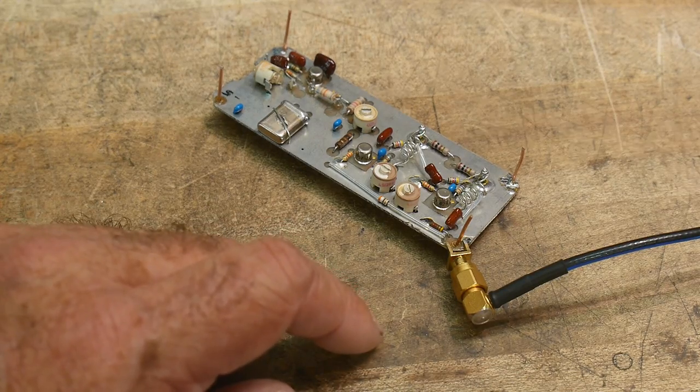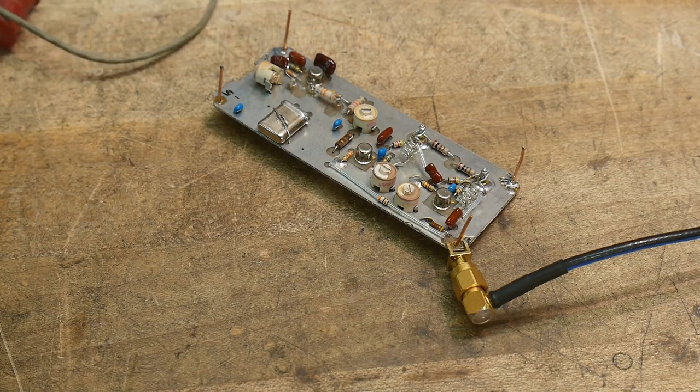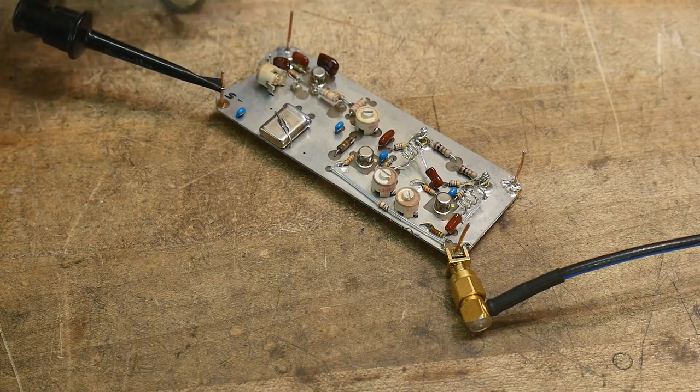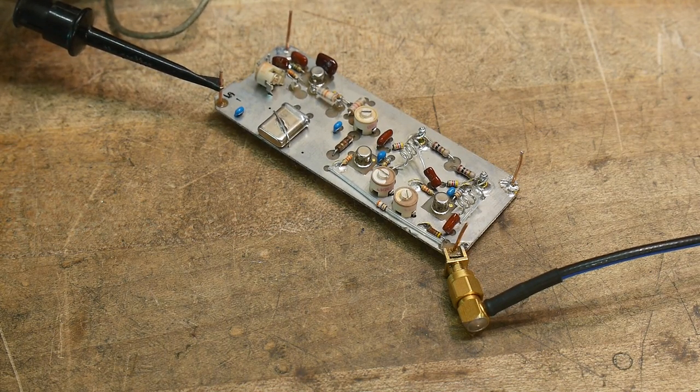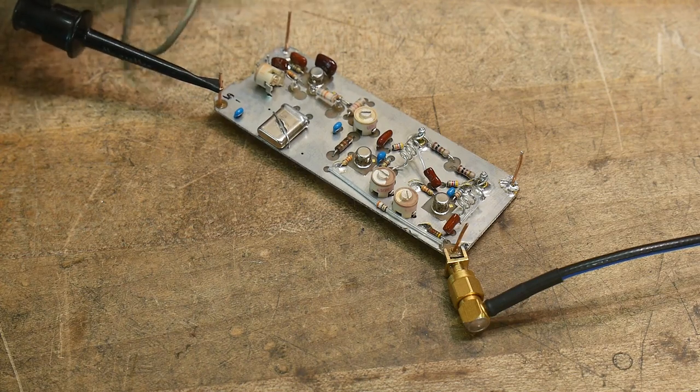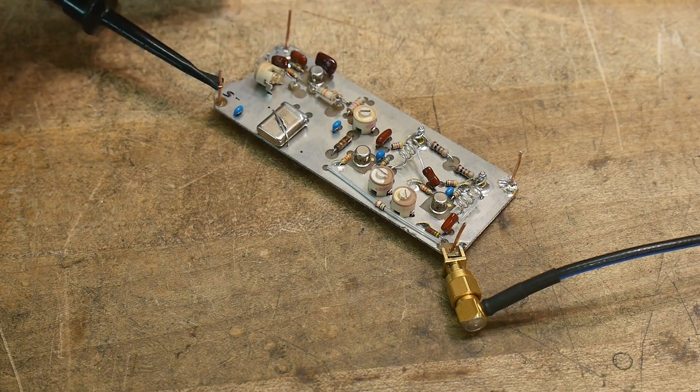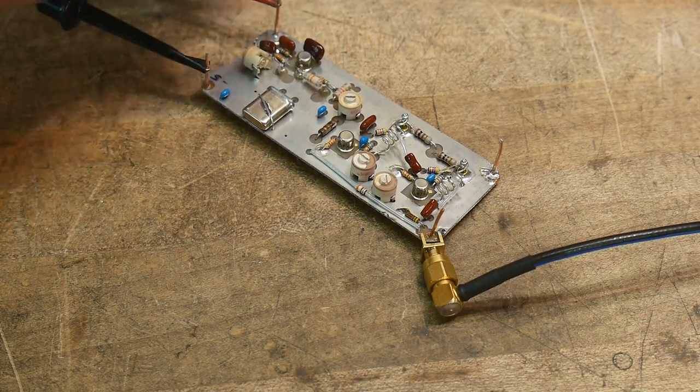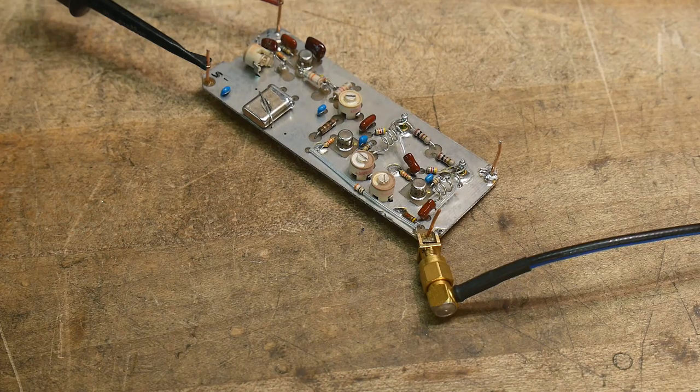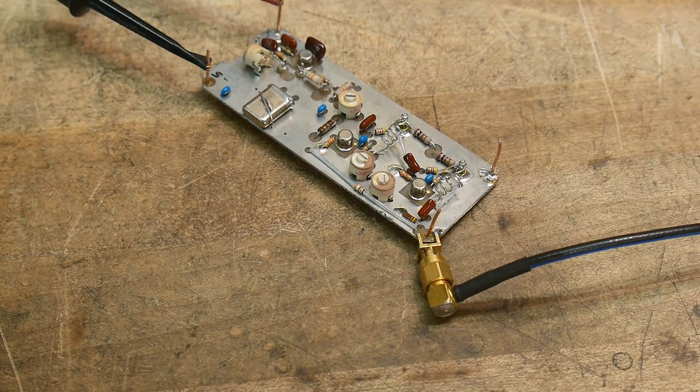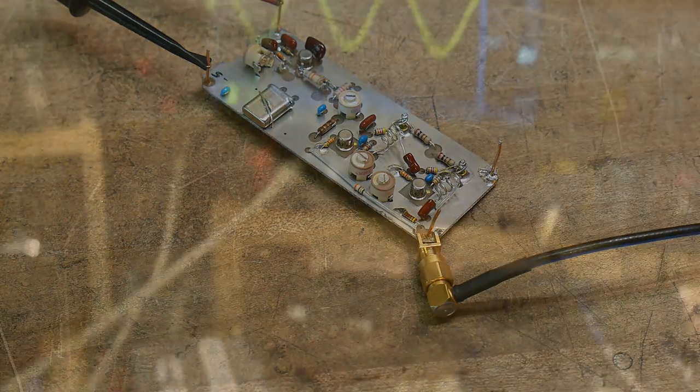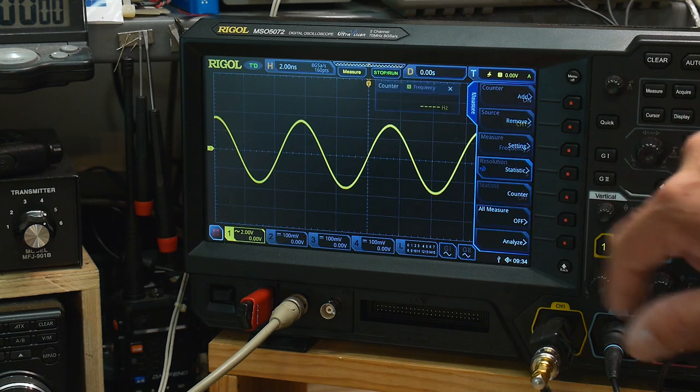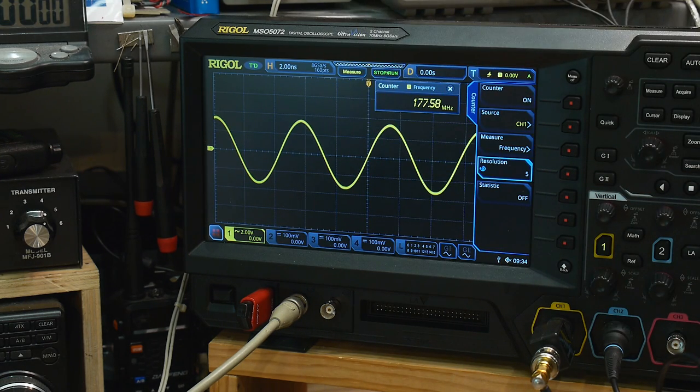The first thing we're going to do is turn it on. This is negative 5 volts. There was some discussion on why - somebody said it's negative 5.2, which is what ECL uses. ECL uses a negative voltage for noise reasons. Let's take a look at the output. We have a beautiful sine wave at 177.58 megahertz. Very nice.